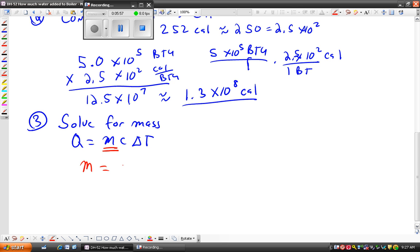So when you solve for mass, you get Q over C delta T. And we can go ahead and we can plug in the numbers. Now the nice thing about it being in scientific notation is you can write the numbers and the power separately if you want. So the Q here is going to be 1.3 times 10 to the eighth.